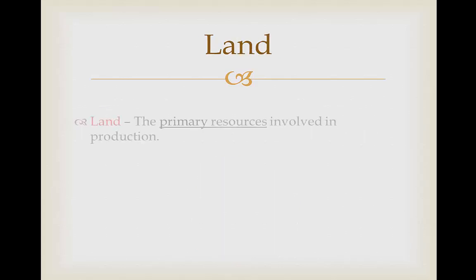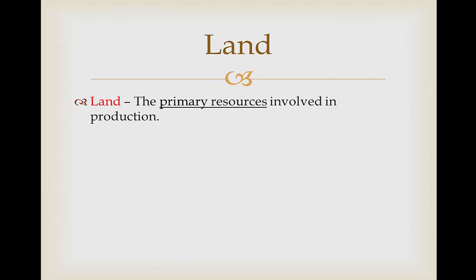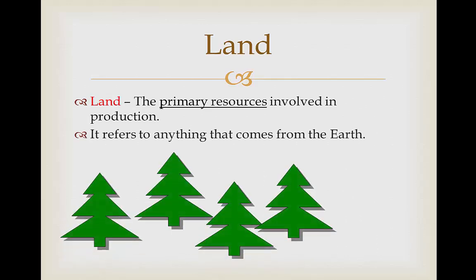Finally we have Land. Land is the primary resources involved in production — pretty much any resource you can get from the land is called land. So for example, wood is going to come from trees. That is then going to be turned into paper by labour, using capital — the assets and machinery. And then enterprise is the whole process of decision making in order to combine capital, labour, and land to get this final product of paper.